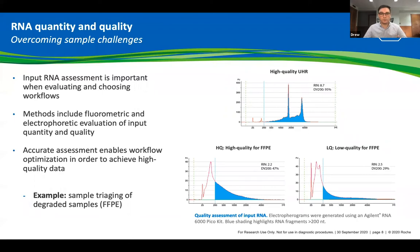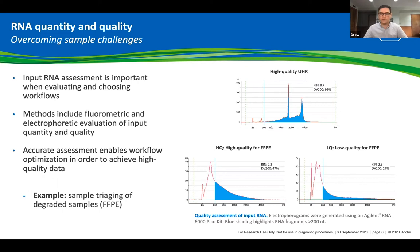RNA fragments shorter than 200 nucleotides are poor substrates for RNA-seq library construction and are unlikely to contribute to the final library. The DV200 metric quantifies the percentage of your entire RNA sample that is above 200 nucleotides in length. While the RIN scores may be similar for two samples, the DV200 metric can show that an FFPE sample is much higher quality given the higher percentage of fragments larger than 200 nucleotides, despite having a lower RIN score. A sample with a lower DV200 score would be deemed lower quality FFPE.